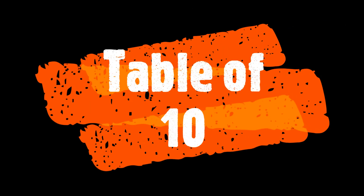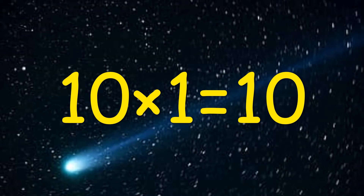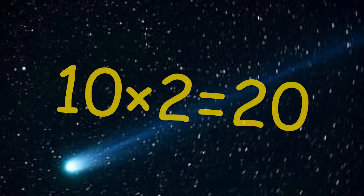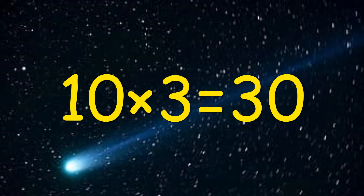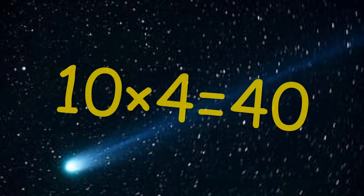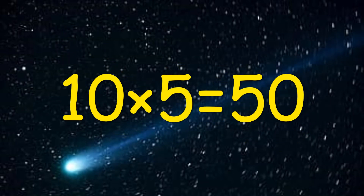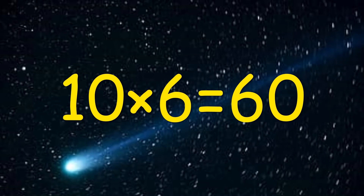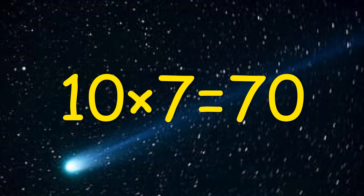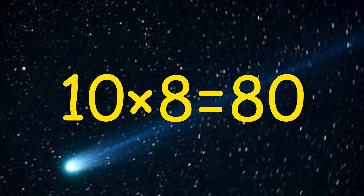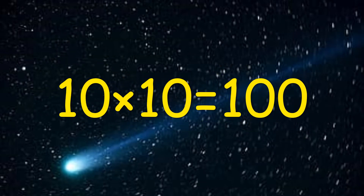Table of ten: ten one's a ten, ten four's a forty, ten five's a fifty, ten six's a sixty, ten seven's a seventy, ten eight's a eighty, ten nine's a ninety, ten ten's a hundred.